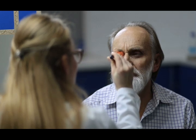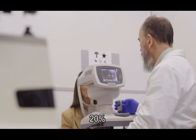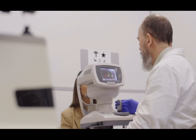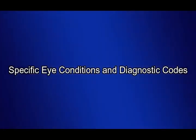The VA uses a general rating formula for diseases of the eye that allows for evaluation based on either visual impairment or incapacitating episodes, depending on which results in a higher disability rating. The breakdown is: 60% for 7 or more treatment visits in the past 12 months; 40% for 5 to 6 visits; 20% for 3 to 4 visits; and 10% for 1 to 2 visits.